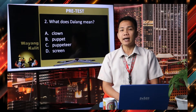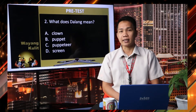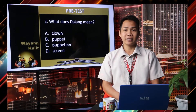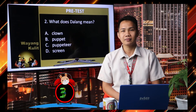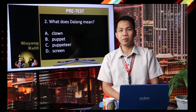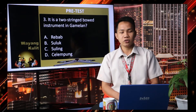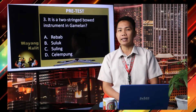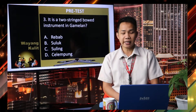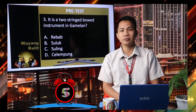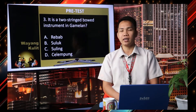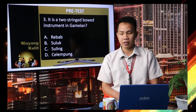Let's have number two. What does Dalang mean? Letter A. Clown, Letter B. Puppet, Letter C. Puppeteer, Letter D. Screen. Your five seconds starts now. Time is up. The correct answer is Letter C, Puppeteer. Let's have number three. It is a two-string bowed instrument in the gamelan. Letter A. Rebob, Letter B. Suluk, Letter C. Suling, Letter D. Salampong. Your five seconds starts now. Time is up. The correct answer is Letter A, the Rebob.